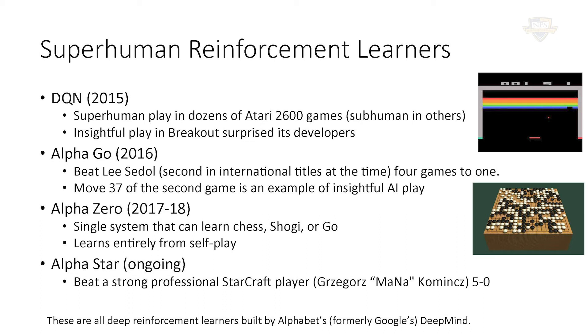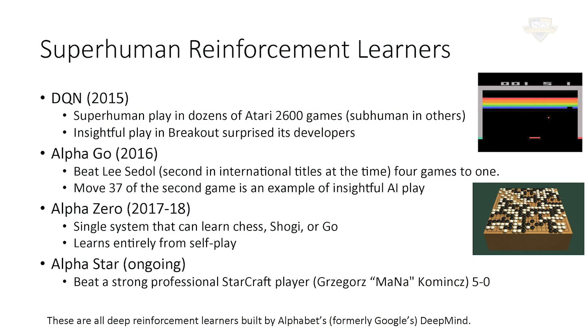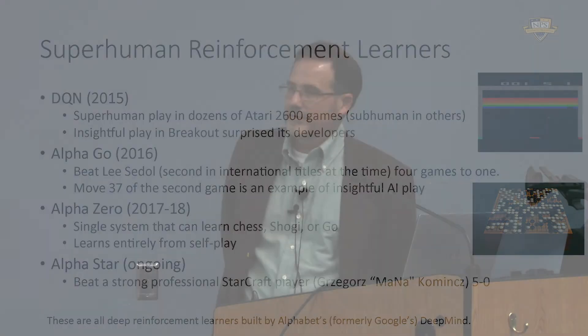The AlphaZero system came next in 2017-18. Not content to merely play Go, you can tell AlphaZero to learn chess, shogi, or Go. And unlike the AlphaGo system, AlphaZero does not make use of any expert recorded play at all to ramp itself up — it learns entirely by playing itself. Last but maybe not least is the AlphaStar project, their ongoing work. They have shown they were able to beat a professional quality StarCraft player. StarCraft is a video game, but it's a far cry from Breakout — very akin to a constructive simulation of the kind we use all the time.